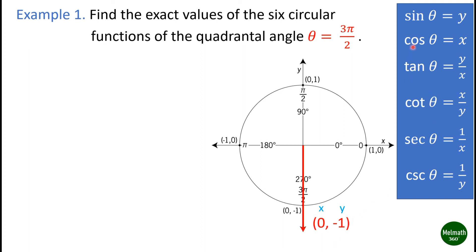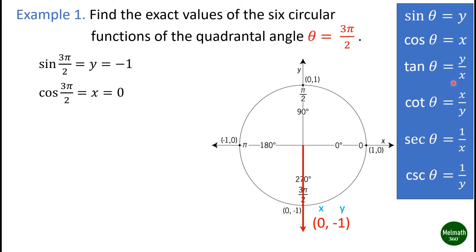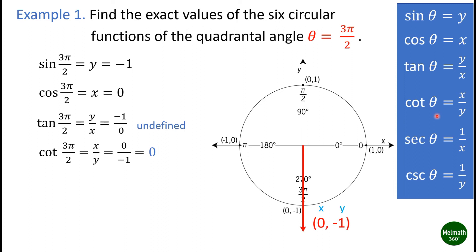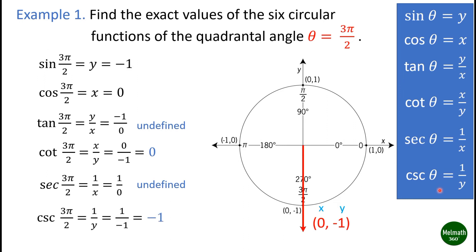Using the definition of the six circular functions: sine(3π/2) = y = -1; cosine(3π/2) = x = 0; tangent(3π/2) = y/x = -1/0, which is undefined; cotangent(3π/2) = 0/(-1) = 0; secant(3π/2) = 1/x = 1/0, which is undefined; cosecant(3π/2) = 1/y = 1/(-1) = -1.